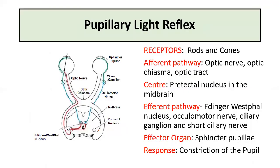The next slide traces the pathway showing the order of neurons — afferent and efferent — and the components of the reflex. The receptors are the rods and cones in the retina, which are the photoreceptors. The afferent pathway, shown in red, includes the optic nerve, optic chiasma, and optic tract. The center is the pretectal nucleus in the midbrain. From the pretectal nucleus, fibers project to the Edinger-Westphal nucleus on both sides. The efferent pathway, shown in blue and green, includes preganglionic and postganglionic fibers: the Edinger-Westphal nucleus, oculomotor nerve, ciliary ganglion, and short ciliary nerves. The effector organs are the sphincter pupillae muscles of both eyes, and the response is constriction of the pupil in both eyes.